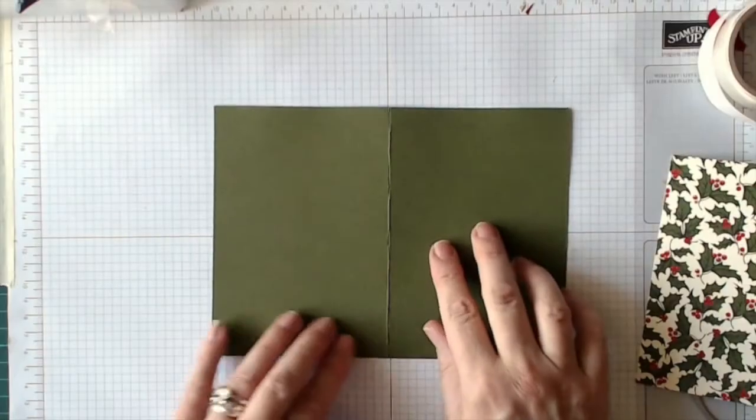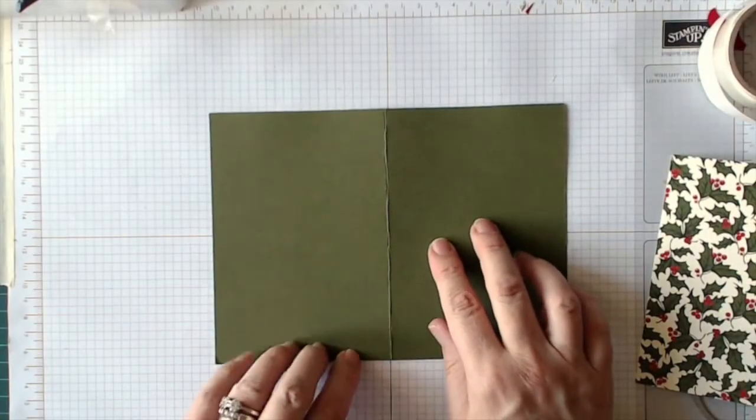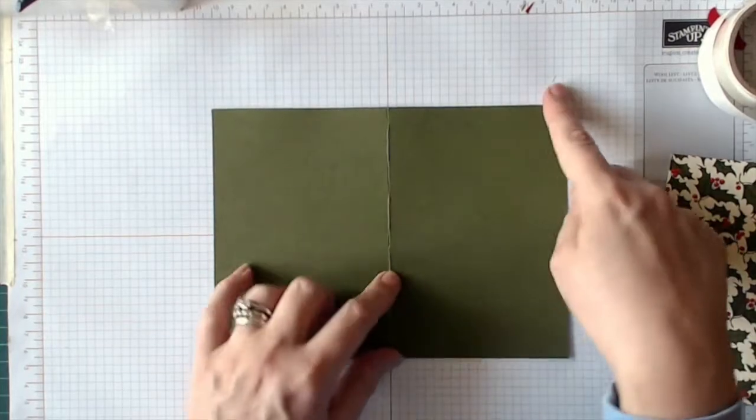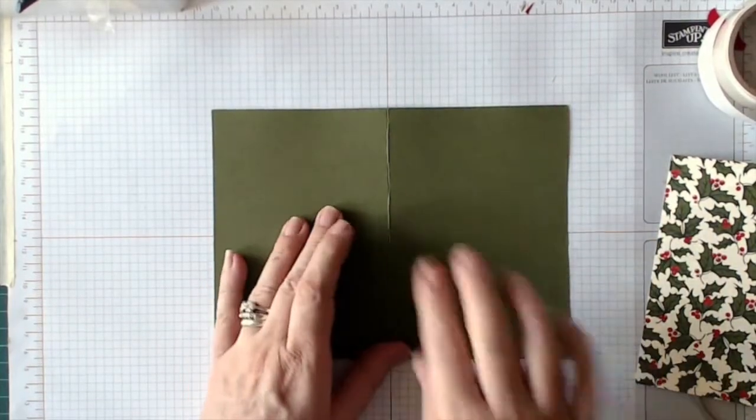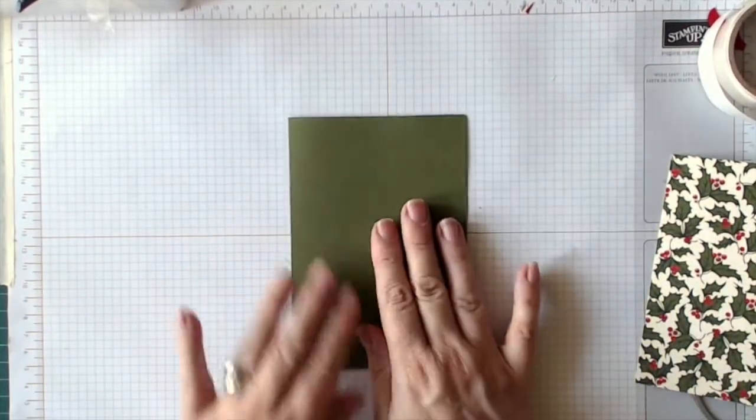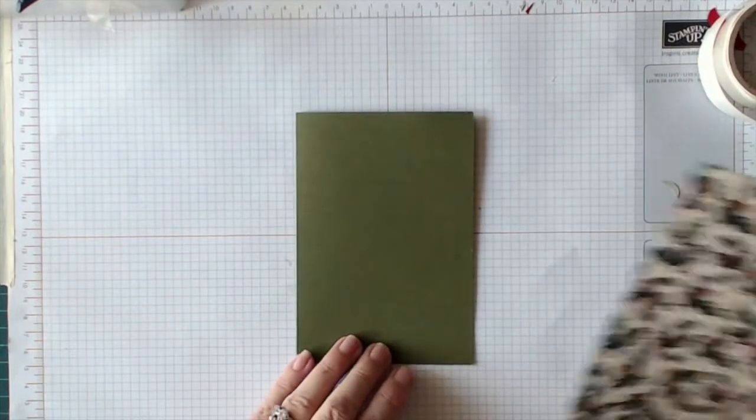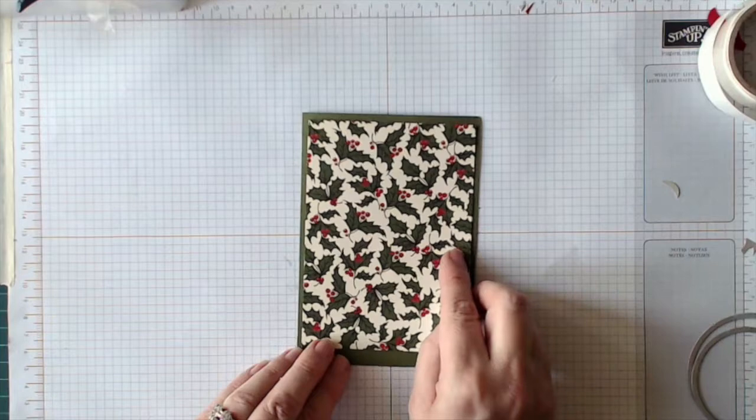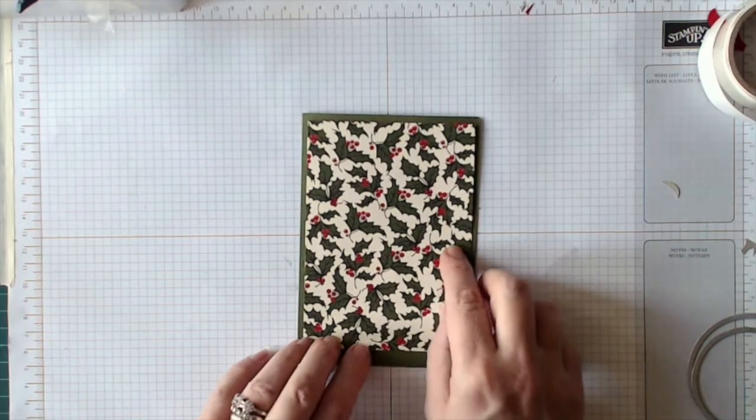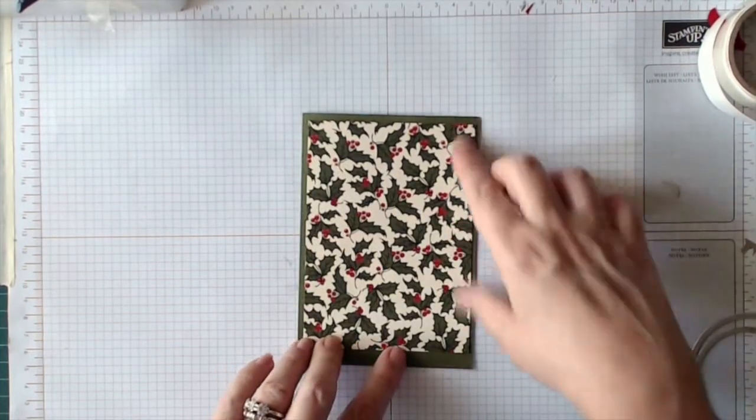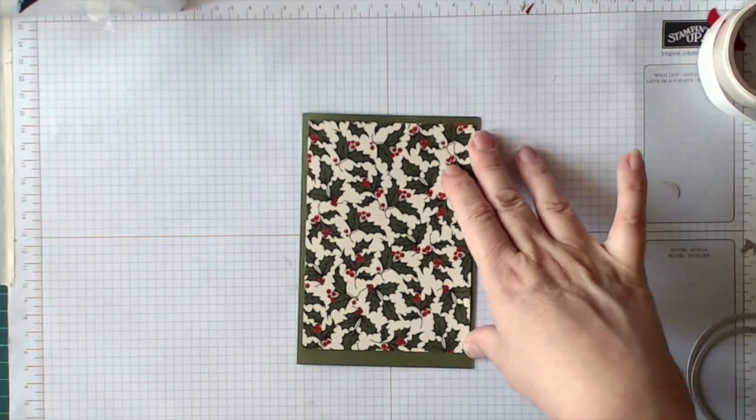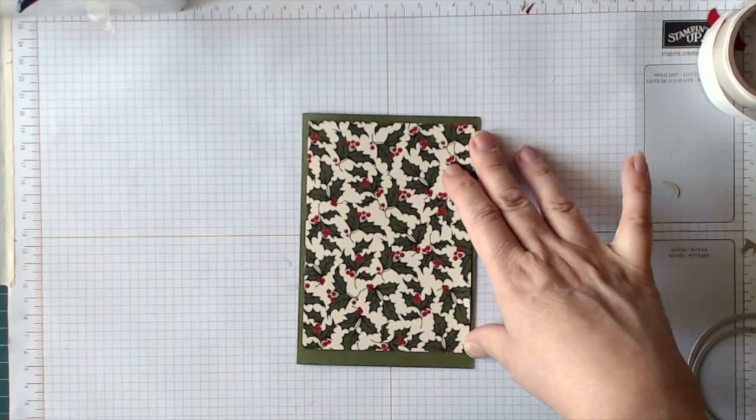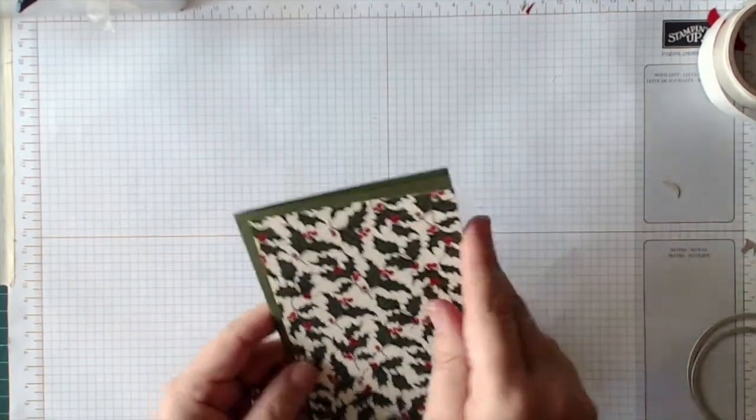This is a piece of Mossy Meadow cardstock which I've cut to 8 inches by 5.5 inches, and I've folded it at 4 inches so that it makes a greeting card. This is a piece of the Home for Christmas DSP and I've cut that at 3.75 inches by 5 inches, so I've got a slightly wider base at the bottom. It's a design choice, what can I say.